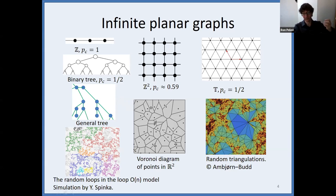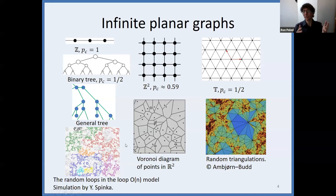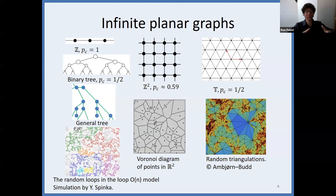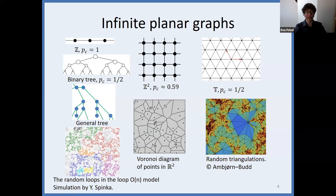I've also put in a picture of random triangulations, and a picture of the loop O(N) model — a random collection of fractal-ish loops. This was actually a motivation for my work: you may think of two loops as adjacent if they touch, and ask what this graph looks like. This was actually the original motivation for this research.